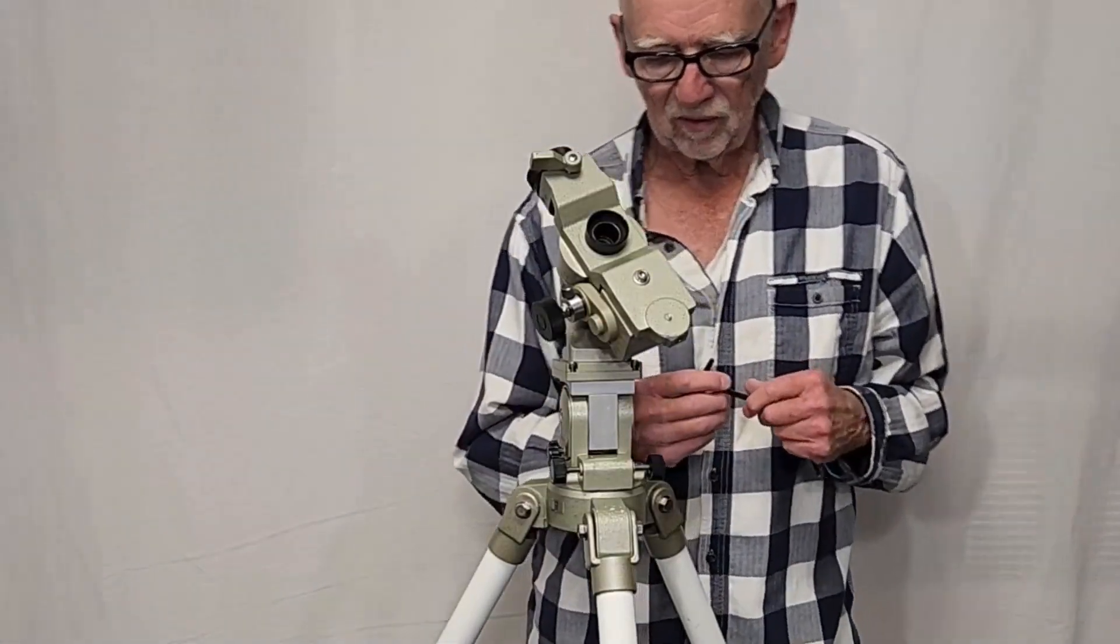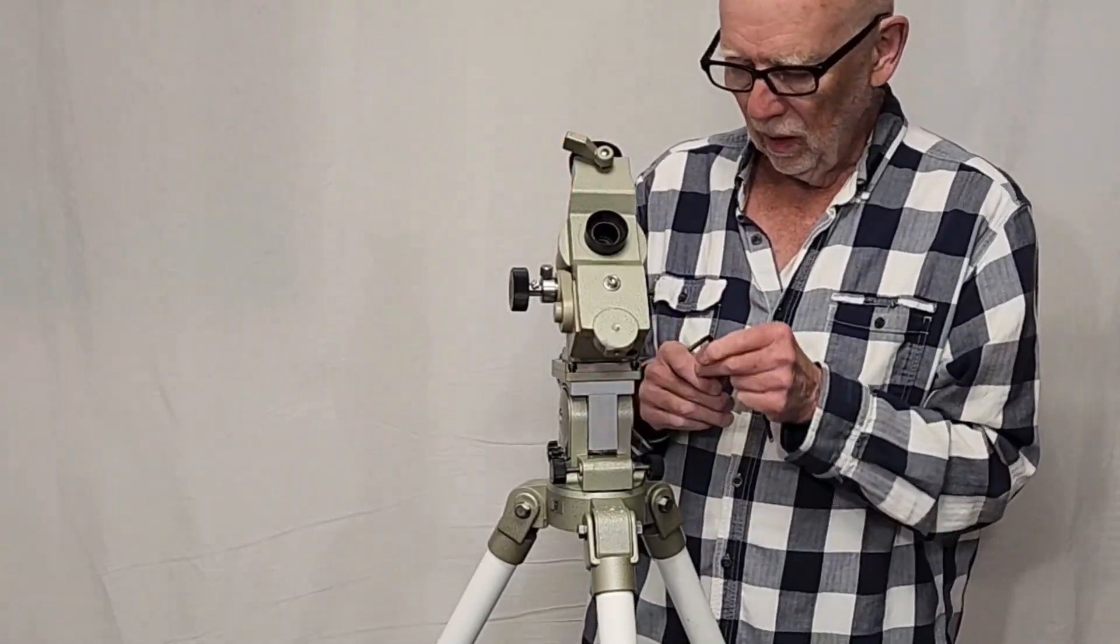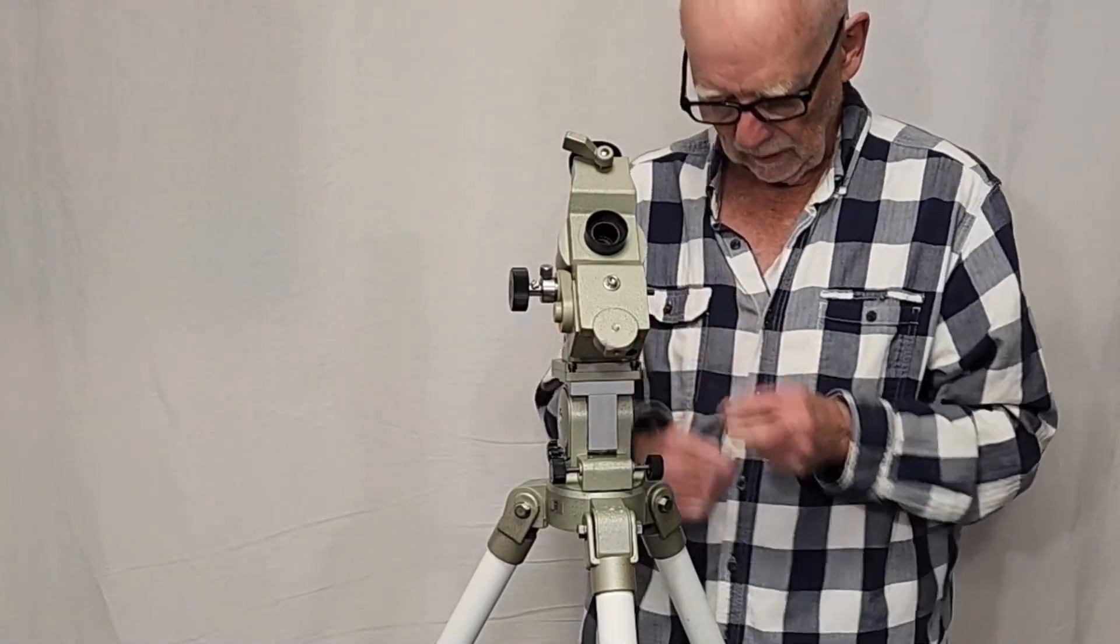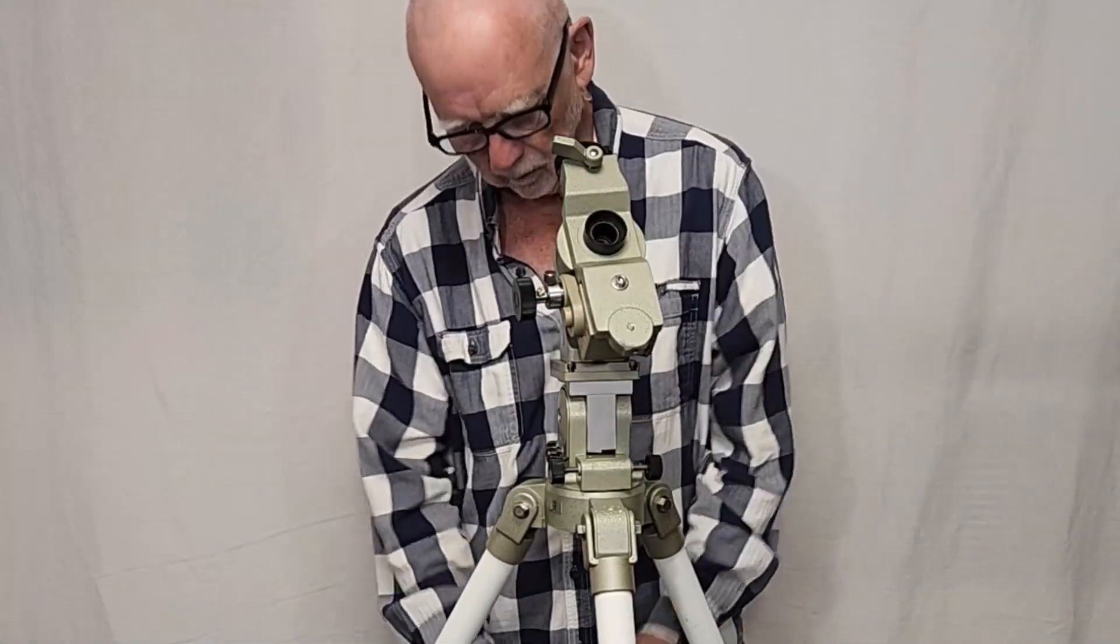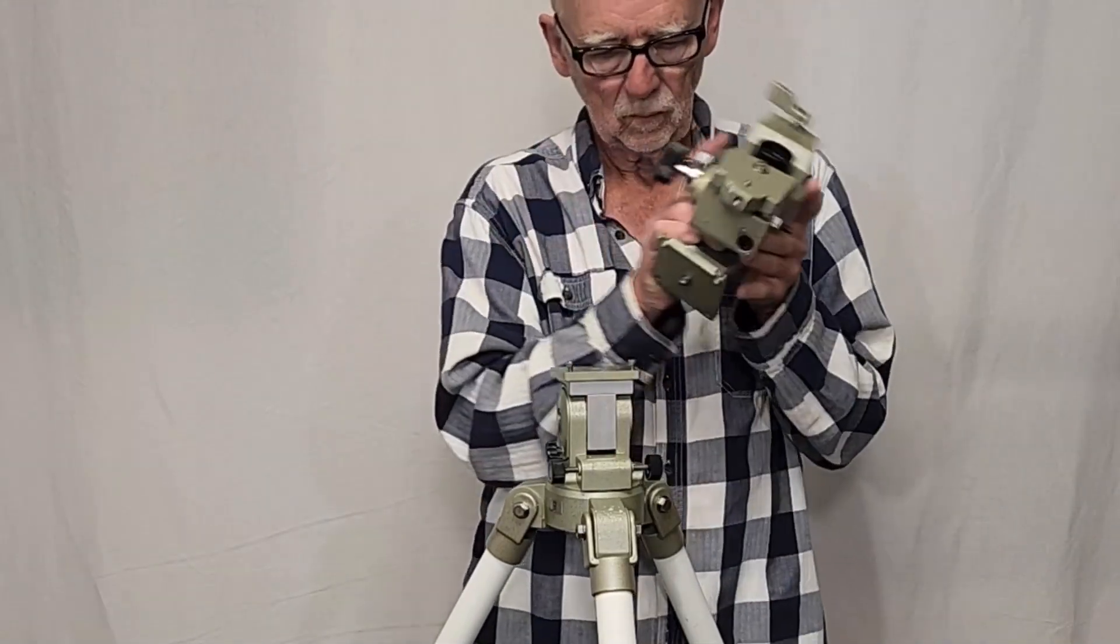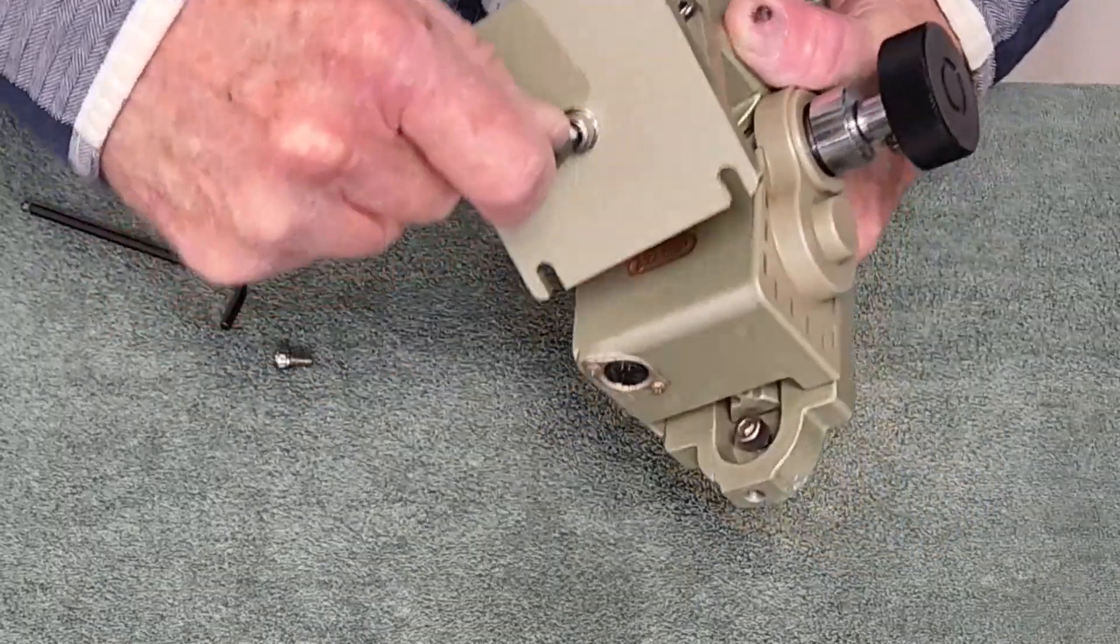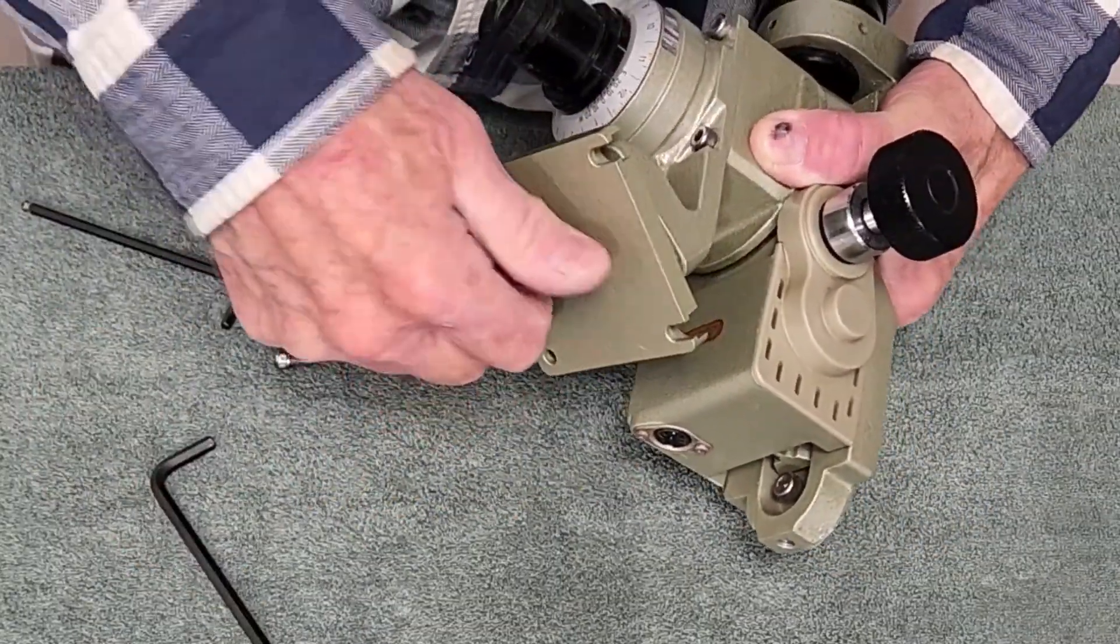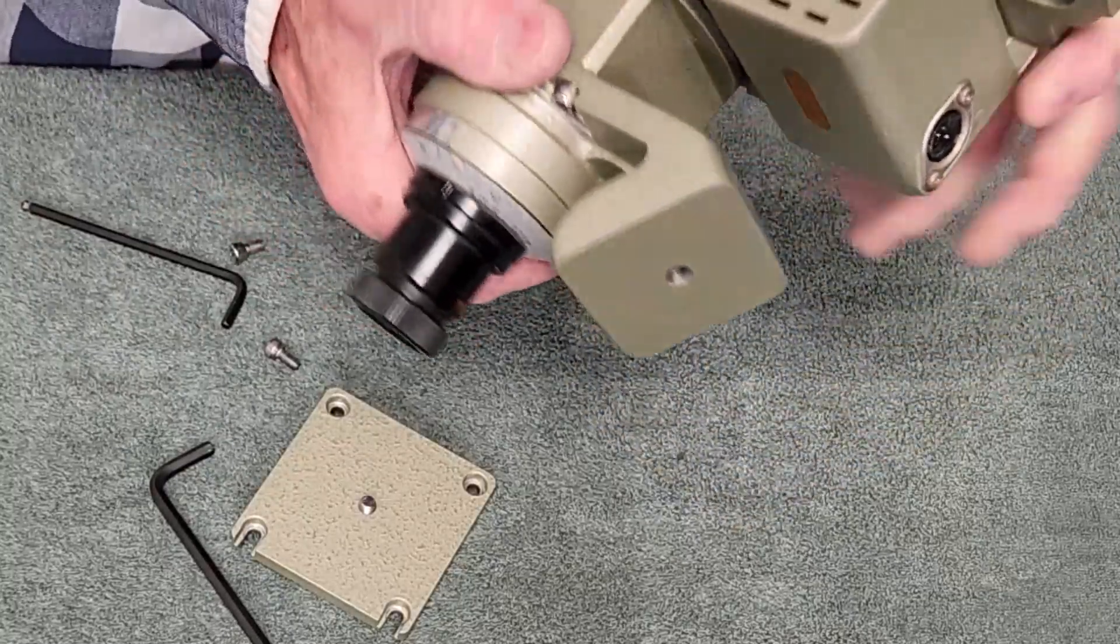If you wanted with a little bit of effort you can take the top part just the right ascension off. Now this part comes off at the bottom here and that will fit on a standard camera tripod.